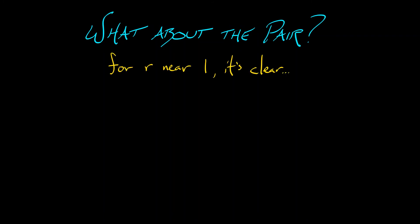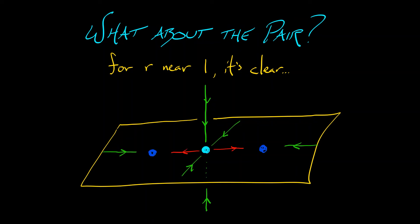In that case, it's kind of clear what's going on. We have our origin with our two dimensions of stability, and then that one weaker dimension of instability that goes out and leads into a pair of equilibria. But look,